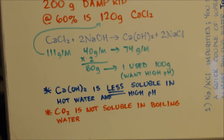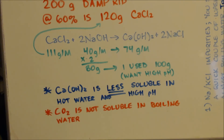Now this is a weird fact, but calcium hydroxide is actually less soluble in hot water. I know most stuff is more soluble when it gets hotter — most salts — but not calcium hydroxide; it's the opposite. And the higher the pH, if you have other hydroxide anions in solution, that makes the calcium hydroxide even less soluble. So you want a high pH and you want it hot.